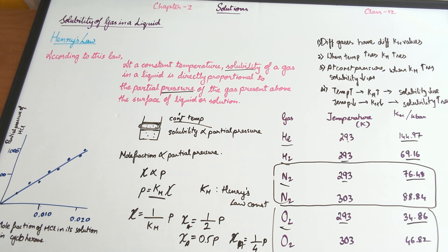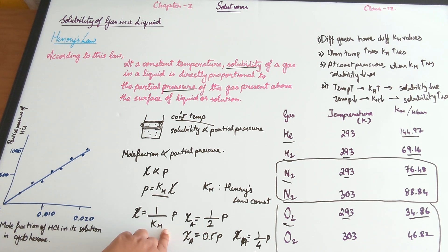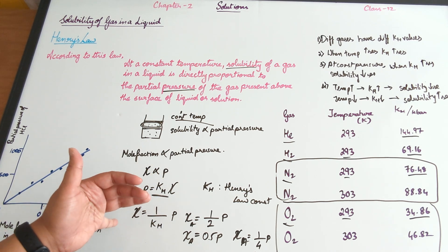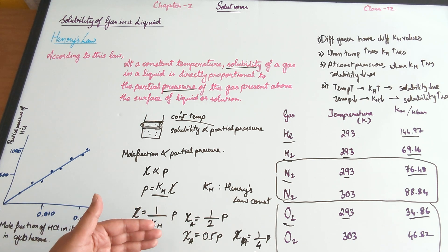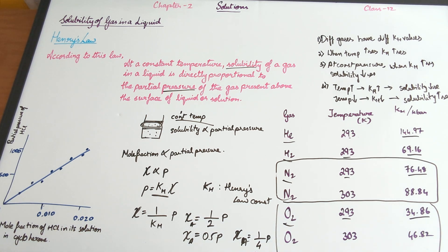The second observation was that for a particular gas at different temperatures, the value of KH is different — when temperature increases, KH also increases. Third, at constant pressure, when KH is high, the mole fraction is low, meaning solubility decreases. When KH is low, solubility is high. Fourth, when temperature increases, KH increases, so solubility decreases. When temperature decreases, KH decreases, and solubility increases — which is why aquatic life loves winter, as oxygen solubility in cold water increases. With that, we're done with Henry's law.